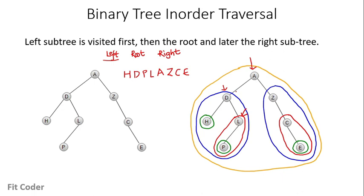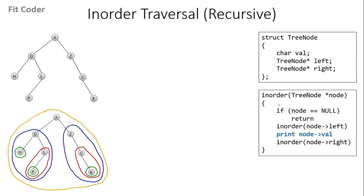Let's see the pseudocode for finding in-order traversal. The recursive method is very simple — just four lines of code. We have an in-order function which accepts a tree node parameter. A tree node is a structure with a value, a left pointer, and a right pointer. In this function, we first check whether the node is null; if it is null, we return. Otherwise, we visit the left subtree, then print the node value, and finally call the right subtree.